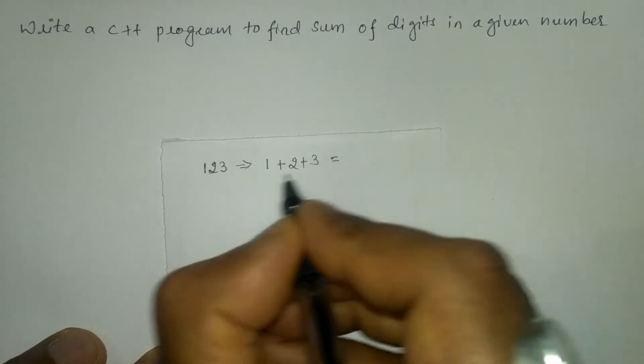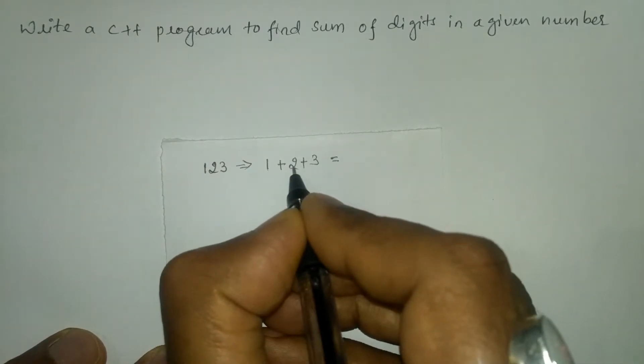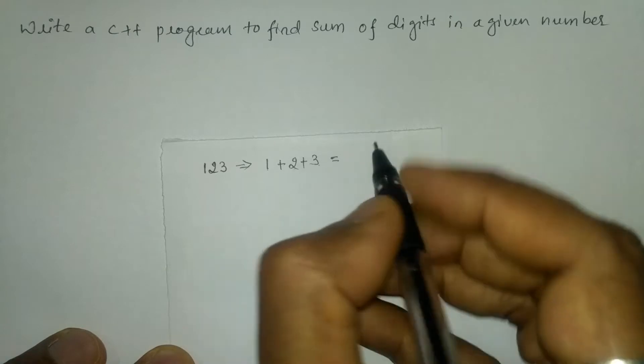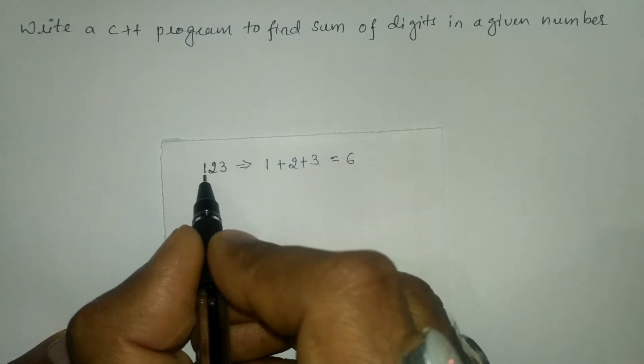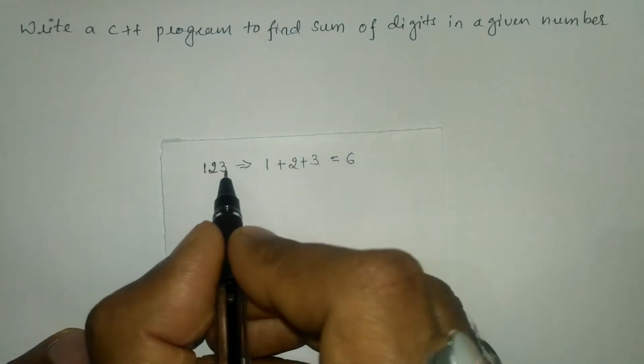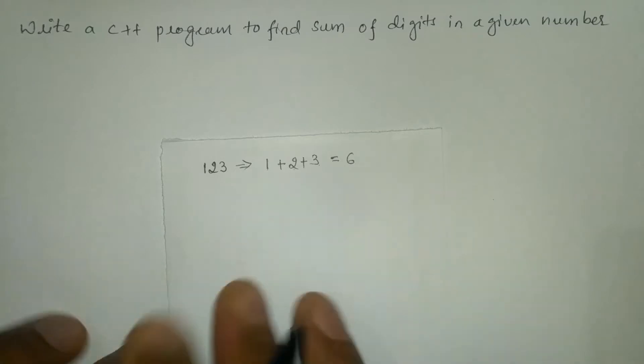So it must give us 1 plus 2 is 3, 3 plus 3 is 6. So it is going to add each and every digit of the given number.